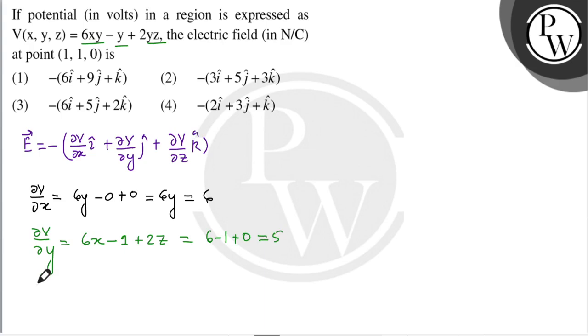Similarly hum calculate karenge del V over del z, yadi z hoga hamara variable, baaki sab constant, to phir differentiate karenge. 6xy ki differentiation 0, y ki differentiation 0, bache yahan 2y, so it is going to be equal to 2y, aur y ki value hai 1, to yeh ho jayega 2.